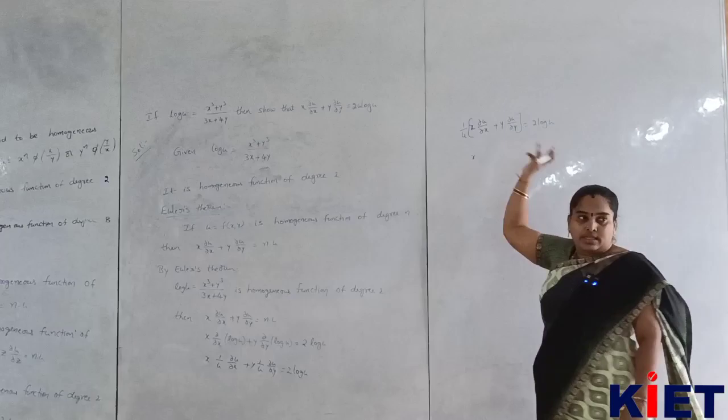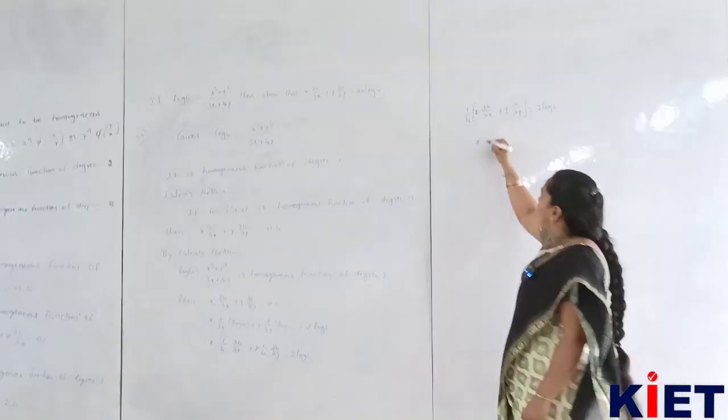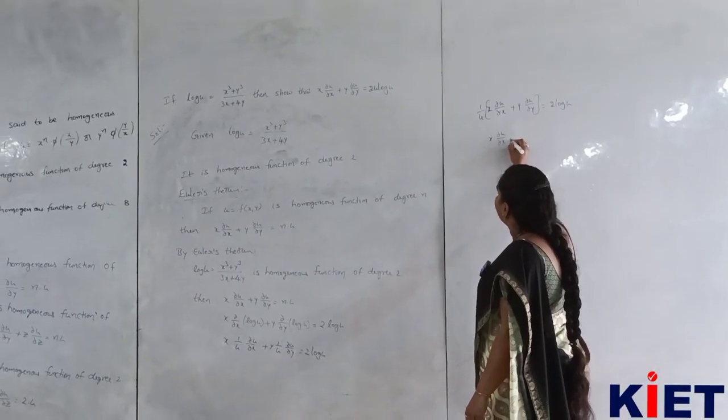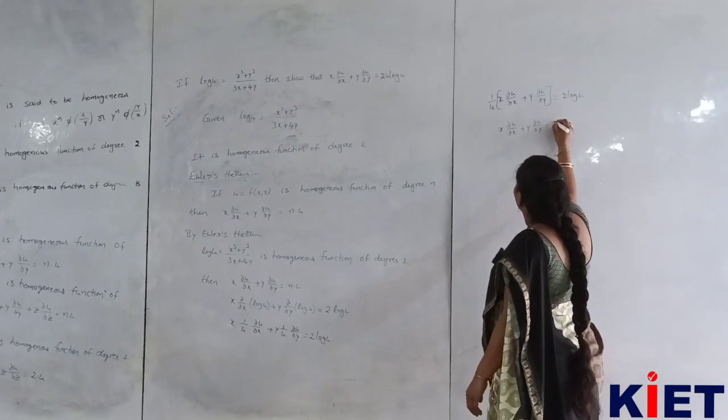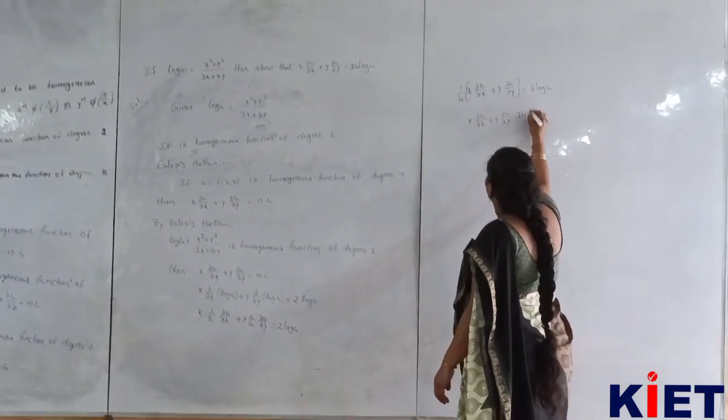u yukada divide chas. x into ∂u/∂x plus y into ∂u/∂y is 2u log u.